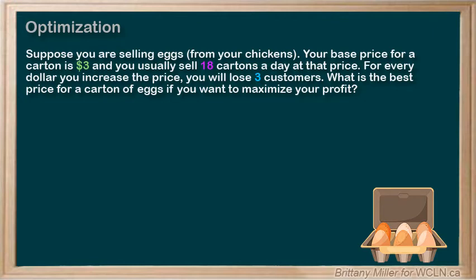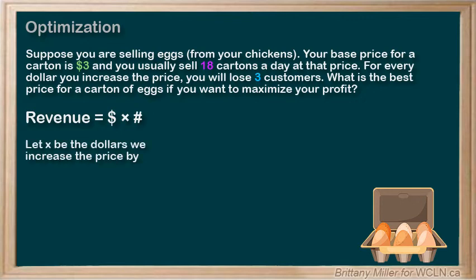We can't really draw a diagram for this one, so we'll skip that step. What are we trying to maximize? Our revenue — the money we make from selling our eggs. R for revenue will equal the price of a carton of eggs times the number of cartons we sell. Let X be the number of dollars we increase the price. Then the price will be 3 plus X, and the number of cartons we sell will be 18 minus 3X. So R equals (3 plus X) times (18 minus 3X).